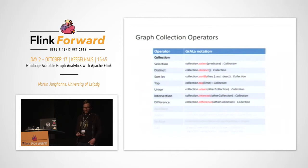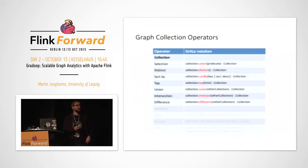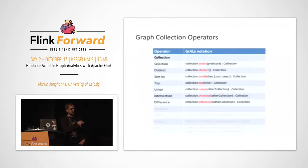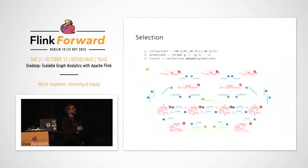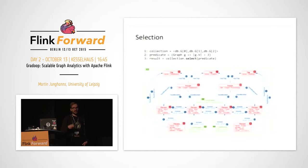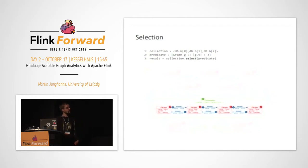The next category are collection operators. You can apply operators on collections of logical graphs — things like selection, where you filter logical graphs from a collection using a predicate function; distinct; sort by; top; union; intersection; and difference. For example, using the select operator: define a collection with three logical graphs, define a predicate that selects only graphs with more than three vertices, and the result is a collection with only the single graph that has four vertices.